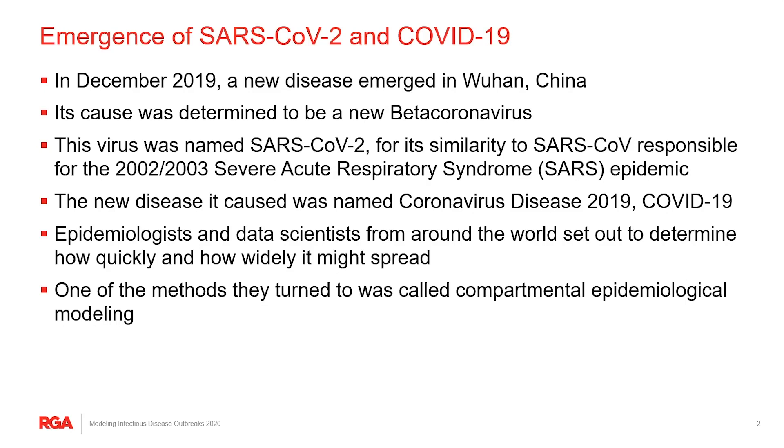During December of 2019, we all know that a new disease emerged in Wuhan, China. Its cause was eventually determined to be a new beta coronavirus, and this virus was named SARS-CoV-2 for its similarity to the SARS-CoV virus, which was responsible for the 2002-2003 SARS epidemic. This new disease that it caused was named COVID-19 for the coronavirus disease 2019.